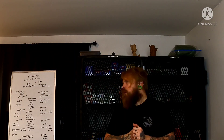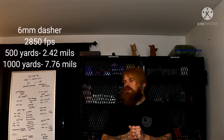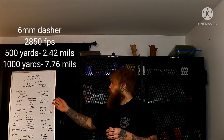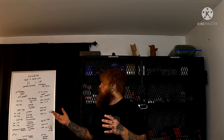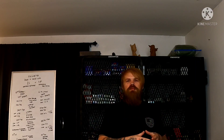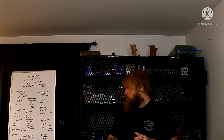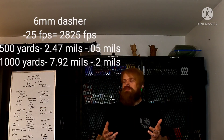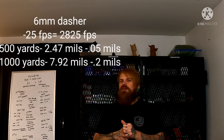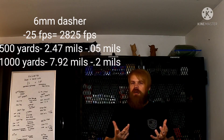The 6mm Dasher running 109 Berger hybrids is at 2850 feet per second. Our base data is 2.42 mils at 500 yards and 7.76 mils at 1000 yards. Adjusting down 25 feet per second on the low end, at 500 yards it's going to be 2.47 mils — an extreme spread of 0.05 mils at 500 yards already.